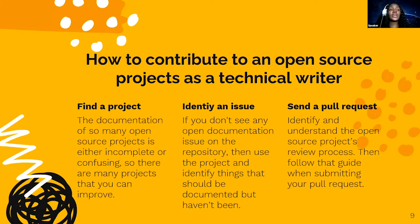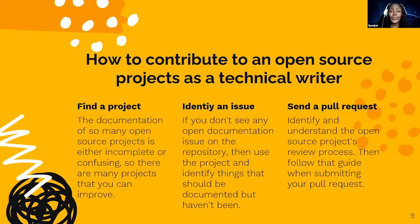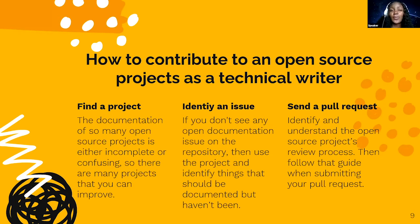The second route is not restricting yourself to things you already know, but exploring things you want to learn. Another important skill of a technical writer is research — moving from not knowing anything about a project to understanding it well enough to explain it to somebody else. So you could focus on learning React, for instance, search for it on GitHub, and find different projects.